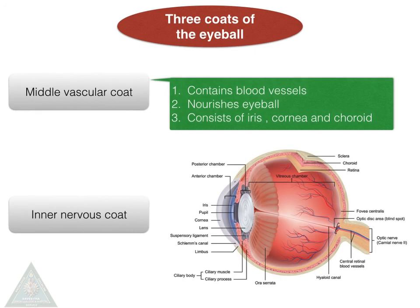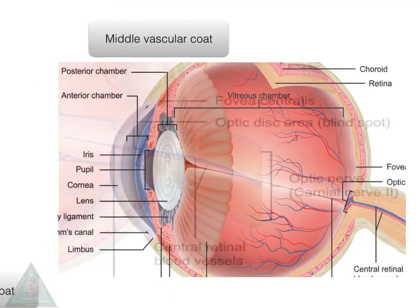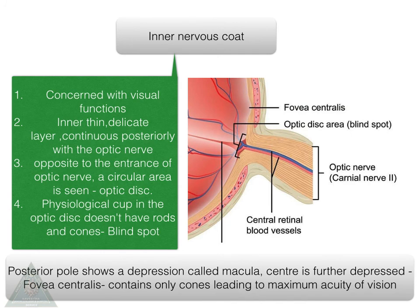The middle vascular coat contains blood vessels which nourish the eyeball and consists of the iris, ciliary body, and the choroid. The inner nervous coat is concerned with visual functions; it is a thin, delicate layer continuous posteriorly with the optic nerve. Opposite the entrance of the optic nerve, a circular area called the optic disc is seen. The physiological cup in the optic disc does not have any rods and cones — this spot is called the blind spot. The posterior pole shows a depression called the macula, whose center is further depressed and called the fovea centralis, which contains only cones, leading to maximum acuity of vision.